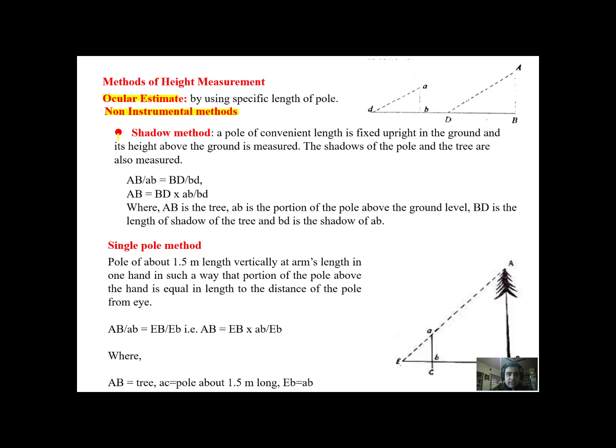Among the ocular measurements we have a shadow method. Now this has been used since ages. If a tree is standing and it has a shadow, we place a small stick of measured length in front of the tree at a certain distance. We have shadows from both. So by using the rule of proportionality we will get AB capital upon small ab is equal to BD upon bd. From this we can get the height of the tree because we know all the three terms except the height of the tree.